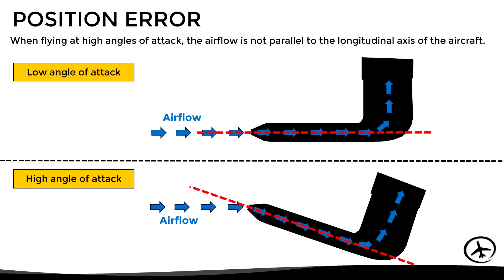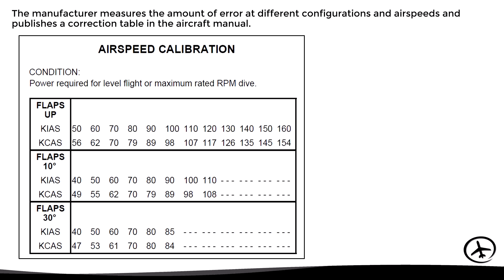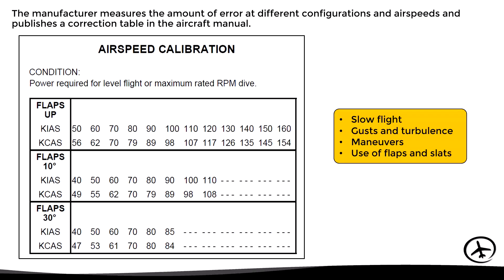However, if we fly at a high angle of attack, the airflow is no longer aligned with the pitot tube, generating slight errors in the measurement of total pressure. These errors are taken into account by the manufacturer in different configurations and speeds to publish a correction table in the aircraft manual. This calibration table corresponds to the airspeed indicator, since it is the only instrument to which the pitot tube is connected. In summary, we must bear in mind that slight errors in airspeed indication will occur when performing maneuvers such as slow flight, flying in gusty or turbulent conditions, or when using flaps or slats.